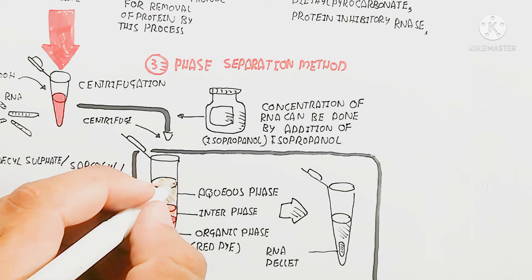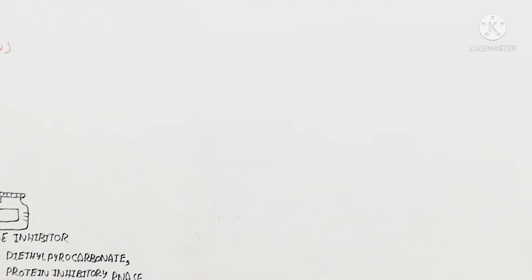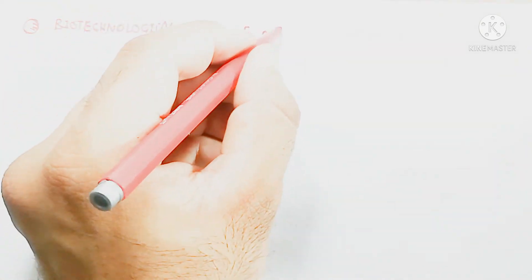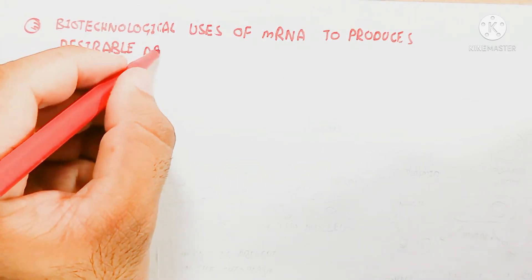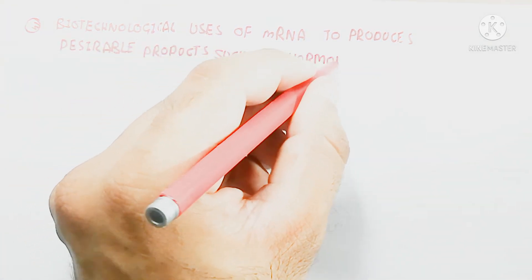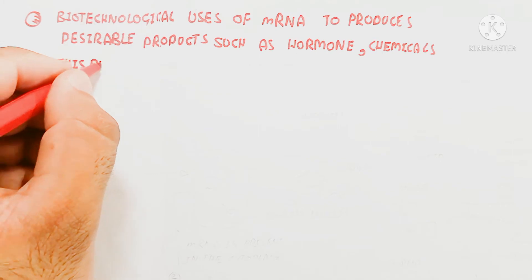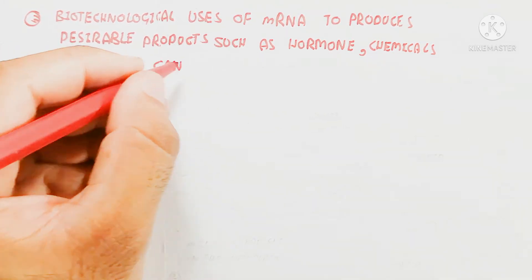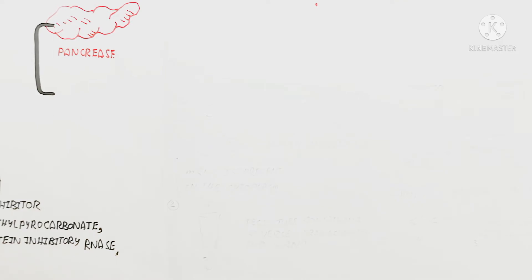The aqueous phase is separated and treated further until an RNA pellet is formed. This RNA pellet confirms that RNA isolation is complete. Now let's understand the biotechnological use of messenger RNA to produce desirable products such as hormones, chemicals, insulin, or steroids. For example, we will consider the pancreas.